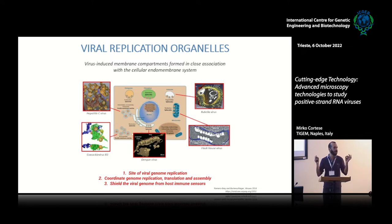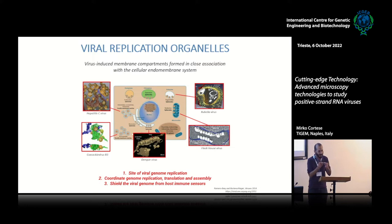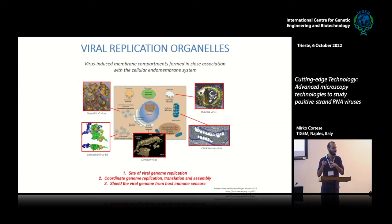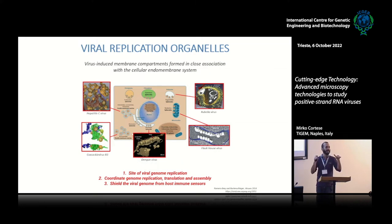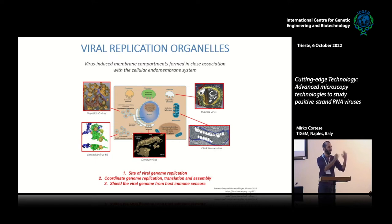The viral genome is a molecule of RNA, basically ready to use. It enters the cells and gets translated because it's very similar to cellular mRNA. The same molecule is the template for three different processes: it's replicated by the viral polymerase, translated by the ribosome, and the exact same molecule is encapsulated inside the virion. These three processes cannot work simultaneously — if the polymerase is engaging the RNA, it cannot be translated; if it's translated, it cannot be encapsulated. Viral replication organelles compartmentalize these steps.